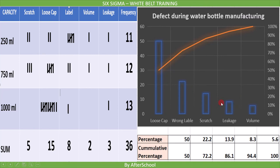The question is how to separate important from unimportant causes contributing to a problem. We do that by using cumulative percentage. We can decide that all defects to the left of 80% need attention. In this example, we have two defects on the left side of 80% — a loose cap and wrong label. If we solve these two issues, we will correct 72% of current issues. This is how we achieve maximum benefit with less effort.